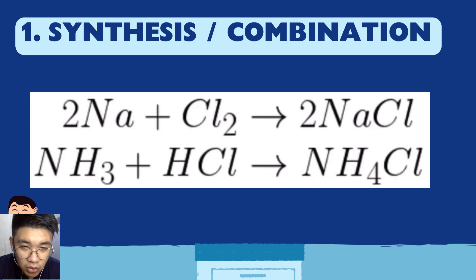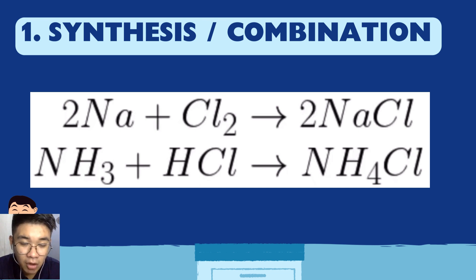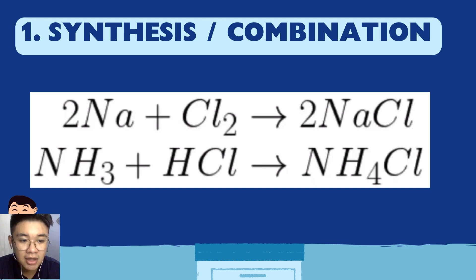Let's check the balancing. On the reactant side, sodium has coefficient 2 and chlorine has subscript 2, so you need 2 sodium and 2 chlorine in the product. In a combination reaction, the product side must show one combined formula — that's why it appears as 2NaCl. The equation is balanced.